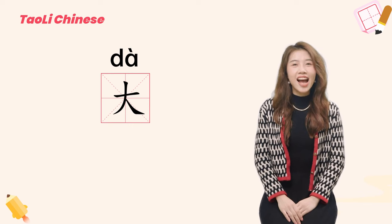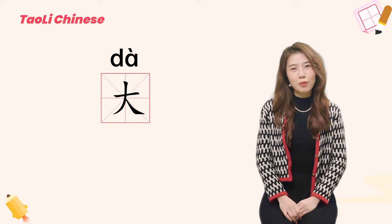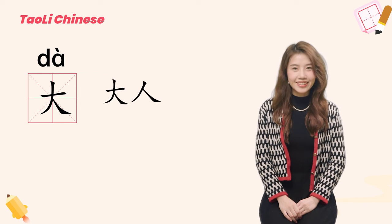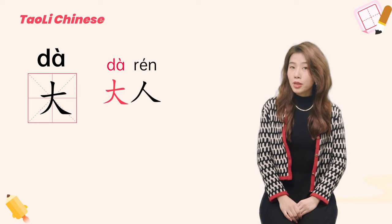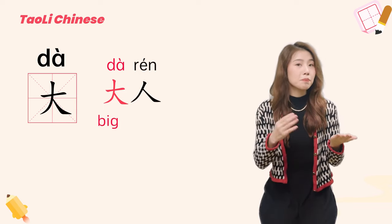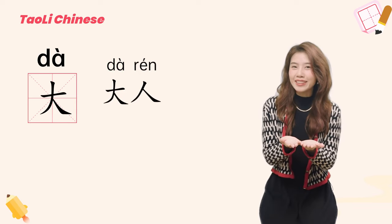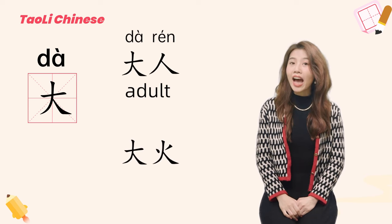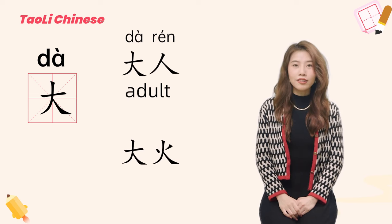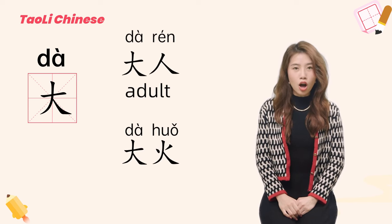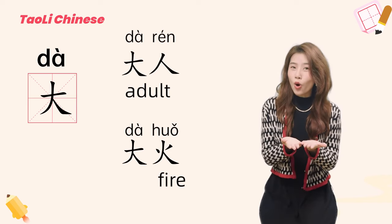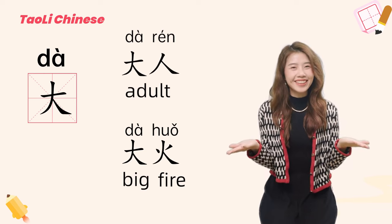Here are some examples that use the character 大. 大人: 大 means big, 人 means people, so 大人 means adults. 大火: 火 means fire, so 大火 means big fire.